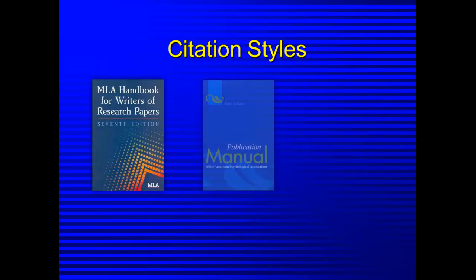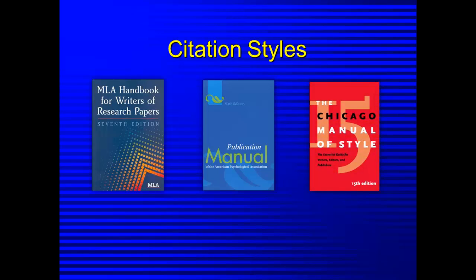Exactly where and how citation elements appear varies by citation style. There are numerous styles, but these three are widely used. Styles dictate not only how citations appear at the end of a work, but also how they appear within the text. The Modern Language Association style is used often for humanities courses. In the humanities, emphasis is placed on authorship, so authors' names are cited within the text of your paper.